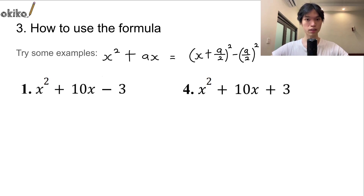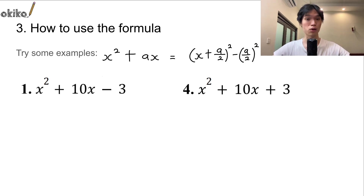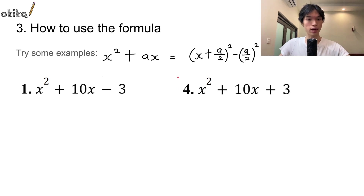Moving on to number 3, we're going to talk about how to use the formula. I'm going to show you some examples live here. Just like the video you saw earlier, we're going to use the completing square formula and try it with some quadratic expressions you may see out in the wild. Let's take a look at question number 1. The most important thing when you complete the square is you need to identify what a is — a is always going to be the number next to x. So in this case, that's going to be the 10 right over here.